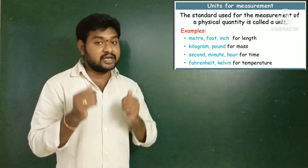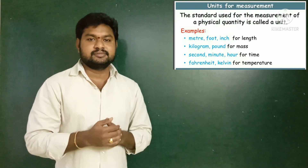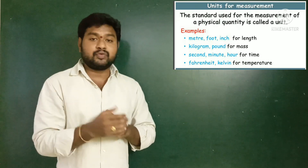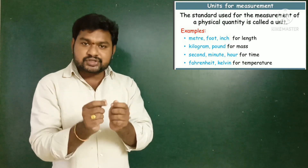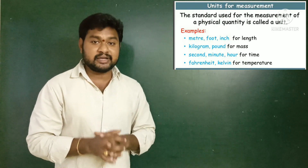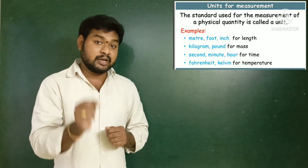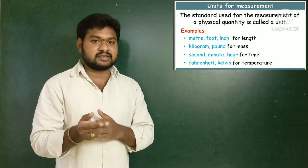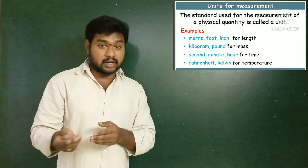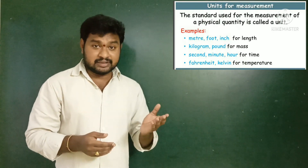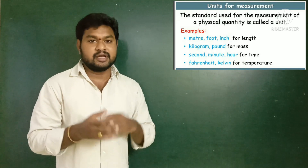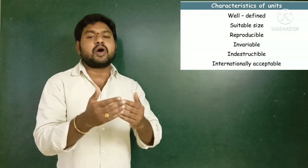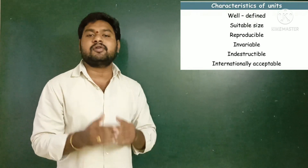The next very important concept is the unit. A unit is the standard used to measure a particular physical property of a substance. For example, when you want to measure mass, we express it in grams, kilograms, or pounds. For length, we use centimeters, meters, or kilometers. For temperature, we use Kelvin, degrees Celsius, or Fahrenheit. These different terms used to indicate physical properties are called units.